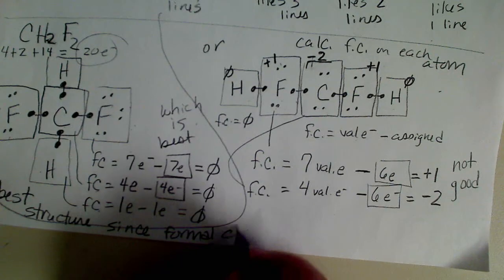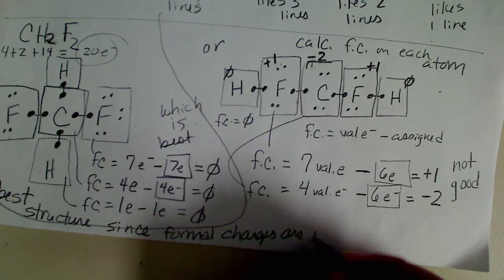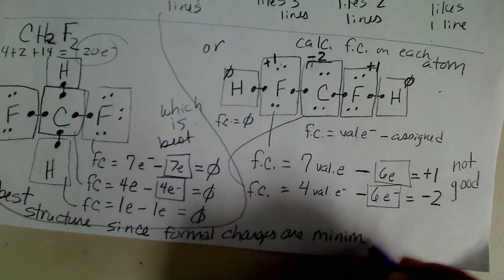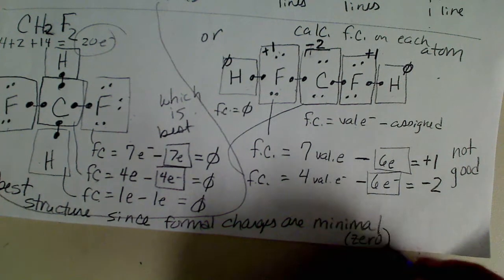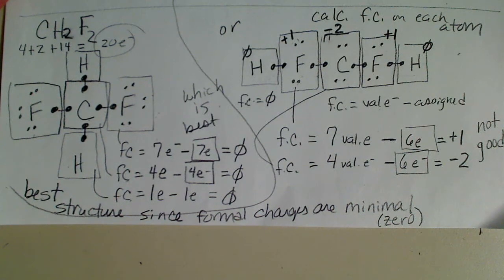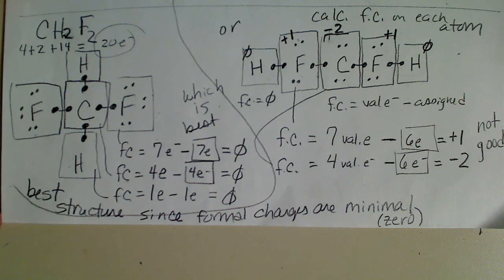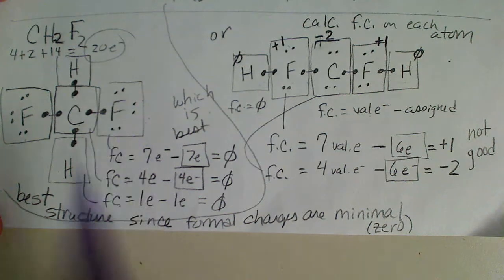The formal charge concept is used to determine which structure, out of two possible valid structures, is the best one. Formal charges should be minimal — in this case, zero is ideal.